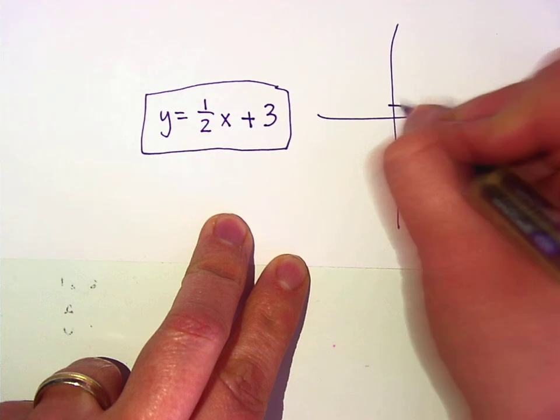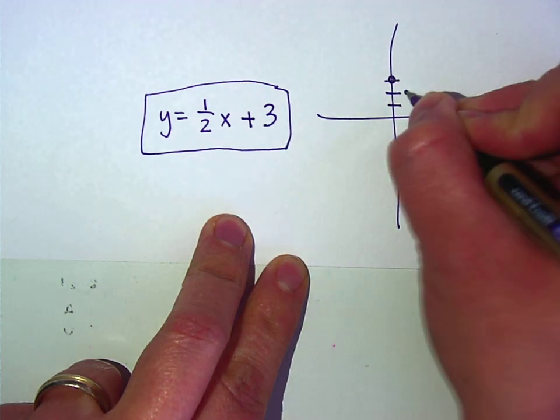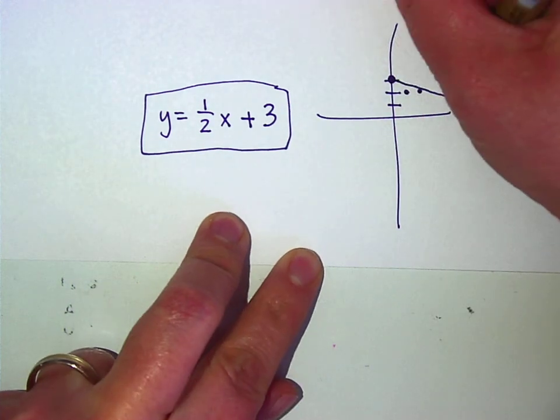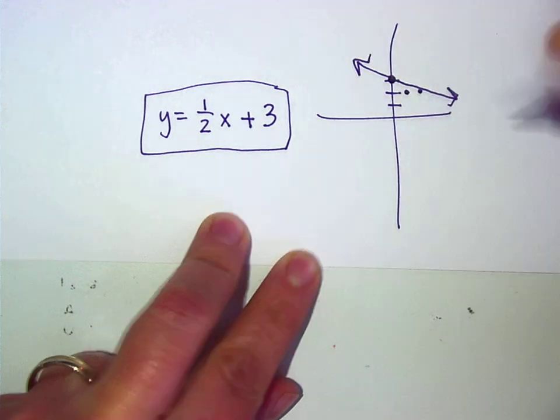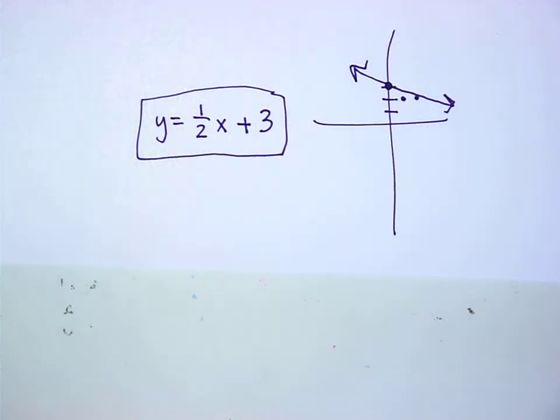You start on the y-intercept and then go down one over two like that. So start on the y-intercept and then do the slope. That's like the y equals mx plus b exactly.